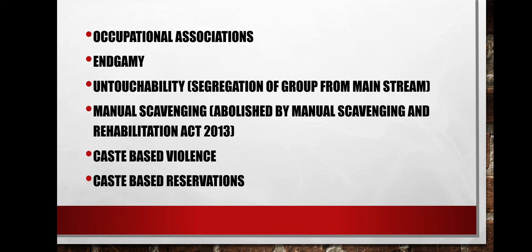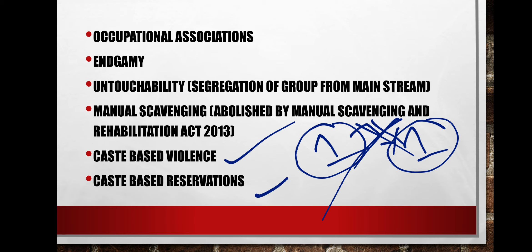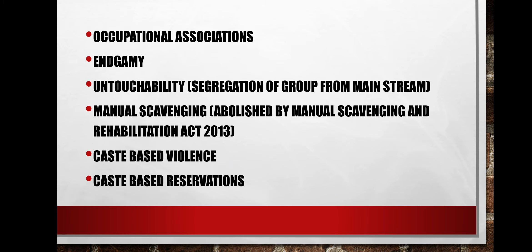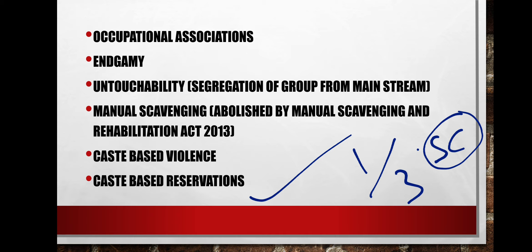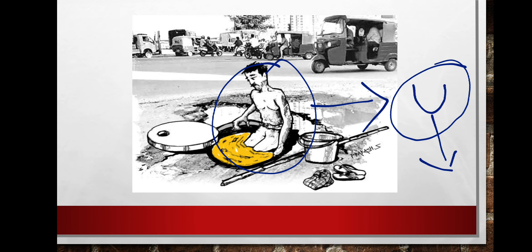Other features include caste-based violence, where upper and lower castes come into conflict due to discrimination and upper-caste actions. There is also caste-based reservation — after independence, due to Dr. B.R. Ambedkar's contribution, caste-based reservation was introduced in the constitution, giving one-third reservation to Scheduled Castes in educational institutions and professions. Manual scavenging work is generally performed by the untouchable group kept separated from mainstream society.